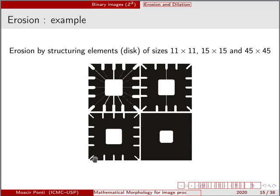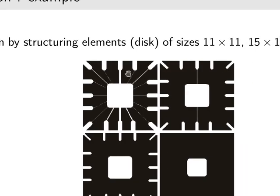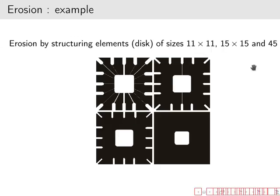Let us take this image as an example. We start with the original image on the left hand side, and then we are going to use a disc structuring element of different sizes and erode it. The first erosion uses an 11 by 11 structuring element, then 15 by 15, and finally 45 by 45. With the largest structuring element it removes everything apart from the central object. Erosion is therefore a useful tool to remove small objects and retain larger objects.